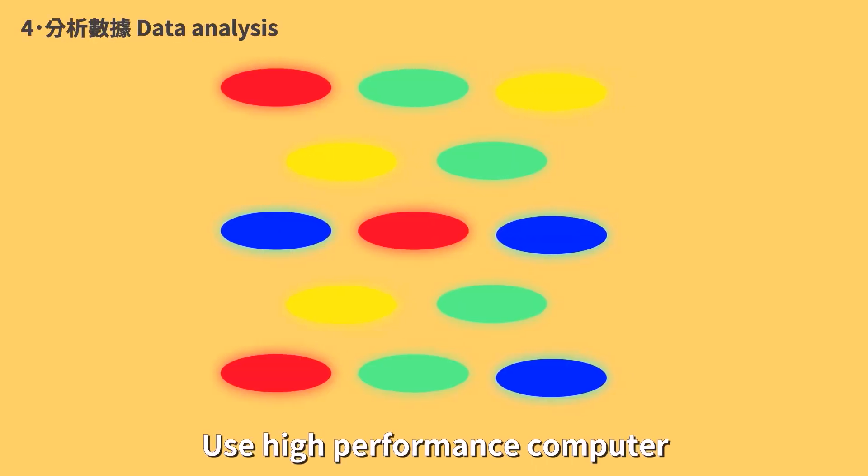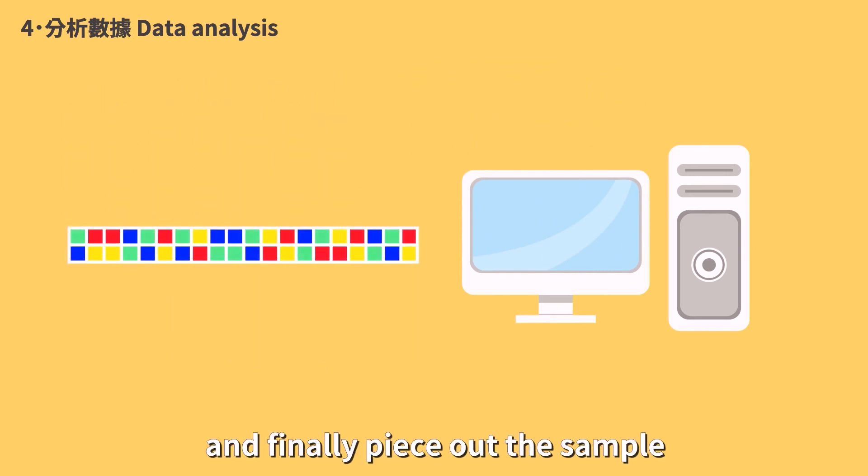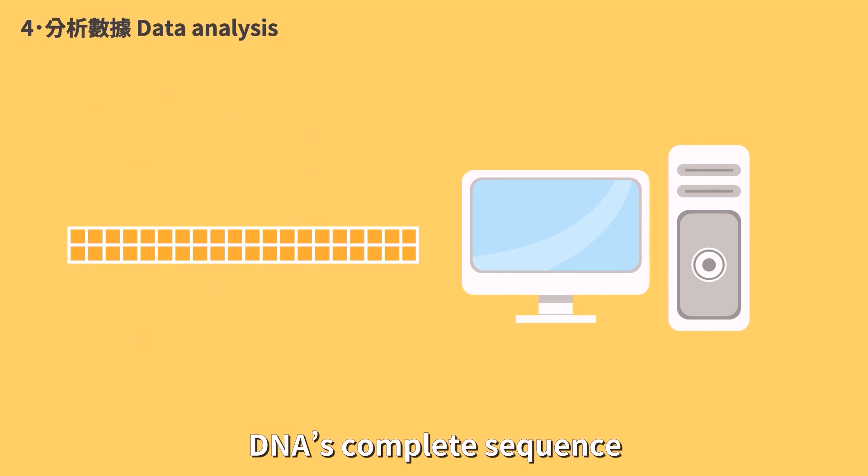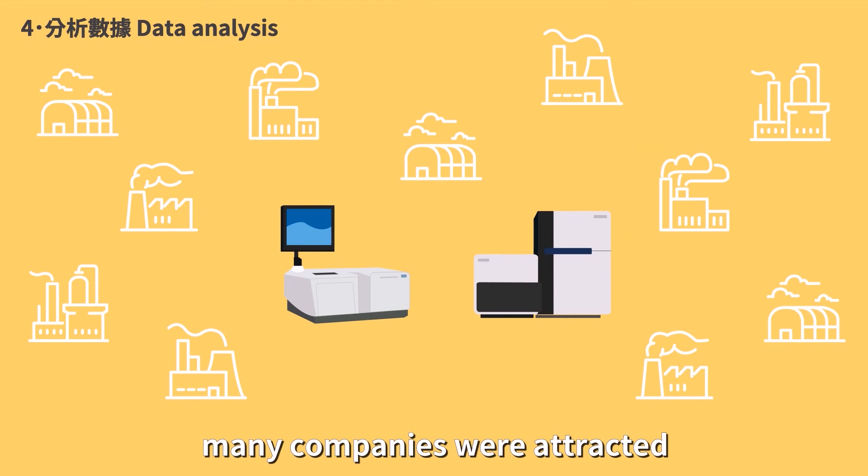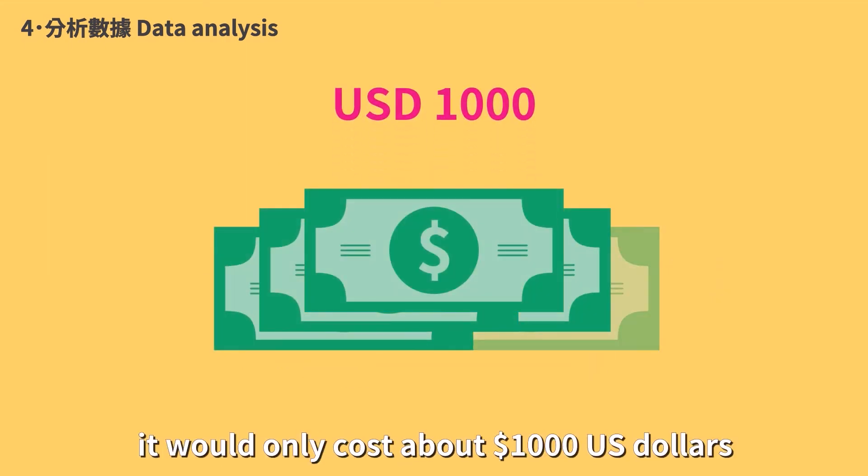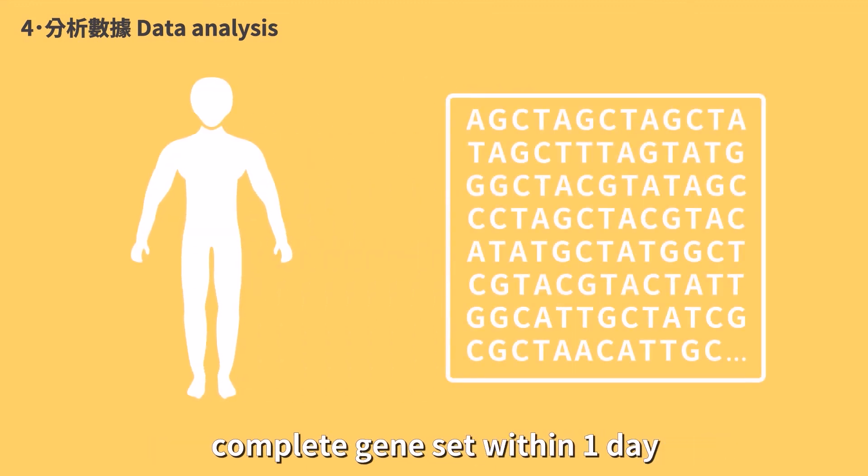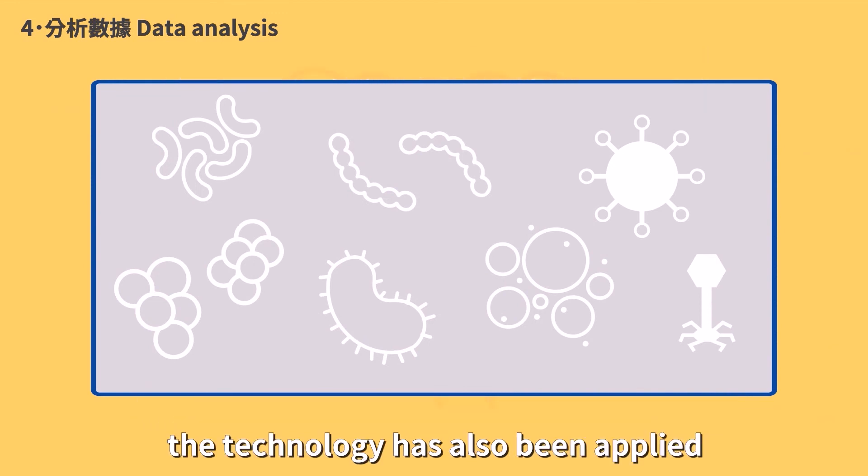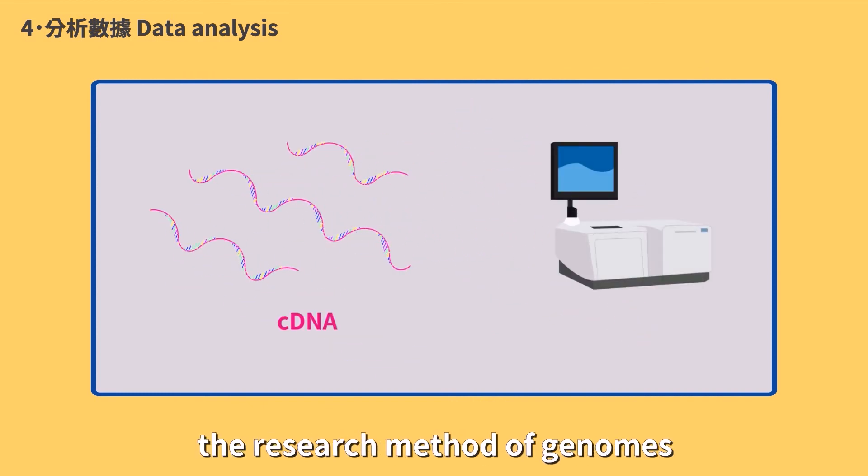Data Analysis. Use high-performance computer to align and arrange the simultaneously obtained base sequences, and finally piece out the sample DNA's complete sequence. Due to next-generation sequencing's high throughput and high speed, many companies were attracted to invest into the technology to begin demercialized application, which decreased costs. At present, it would only cost about $1,000 to complete sequencing of an individual's complete gene set within one day. In addition, the technology has been applied to analyze the intestinal microbiomes and RNA sequences of samples, which has greatly changed the research method of genomes.